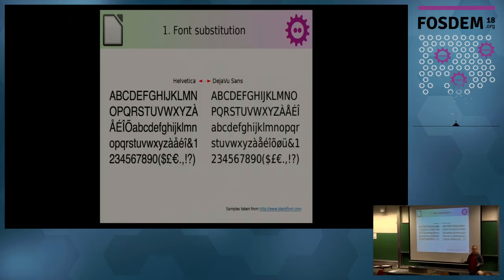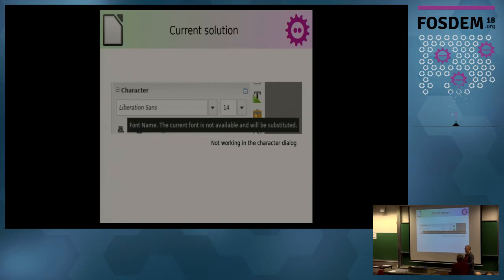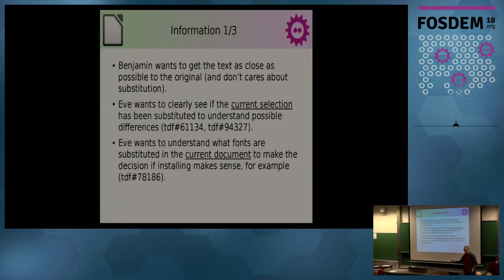The first area is font substitution — when you get a document with a font like Helvetica that's not on your system and has to be replaced. Today, in the standard toolbar dropdown, the font name is shown in italic to indicate it's being substituted, and a tooltip says 'this font is substituted.' But it doesn't work in the character dialogue, so you can't easily see what font is actually being replaced by what.